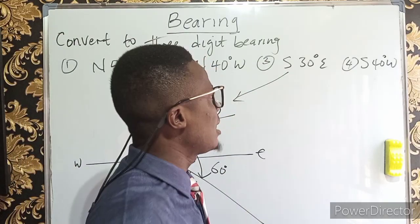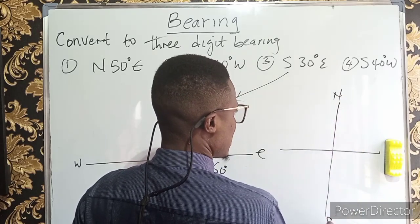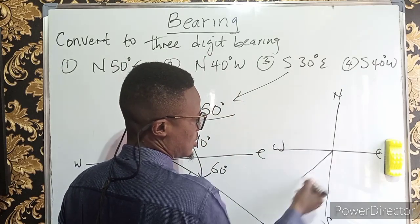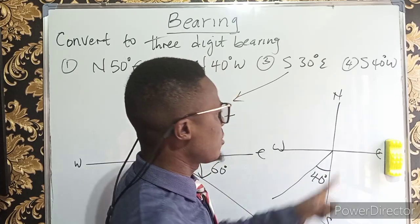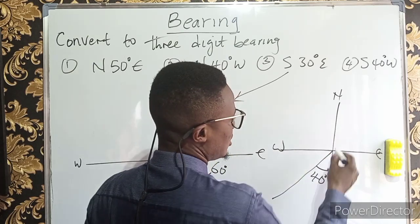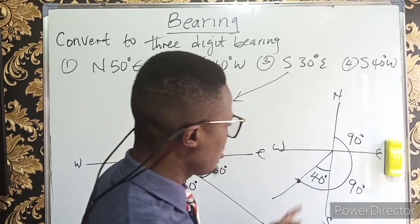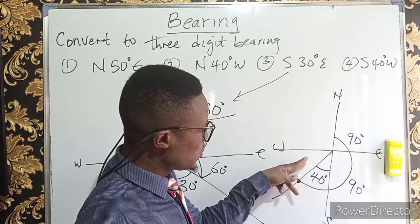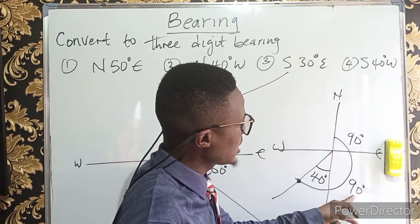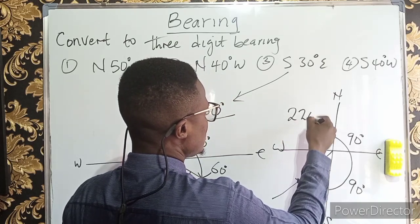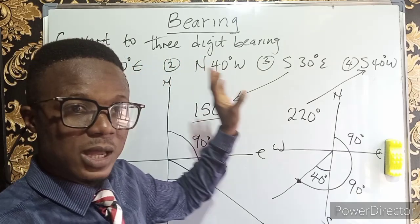For 40 degrees west of south: draw the cardinal point with north, south, west, east. Southwest is in that region and the angle is 40 degrees. Beginning from the north and turning clockwise, the first quadrant is 90 and the second is another 90 — giving 180. We already know the angle here is 40 degrees, so no subtraction is needed. The required bearing is 90 plus 90 plus 40, giving 220 degrees. This is how you convert compass bearing to three-digit bearing.